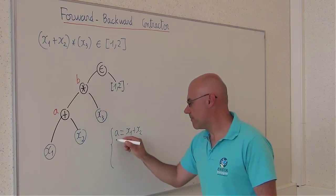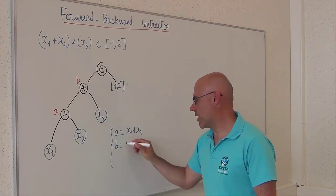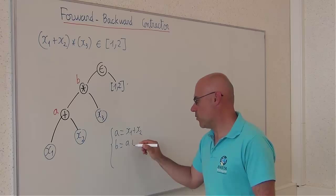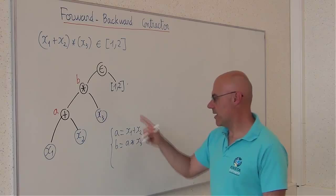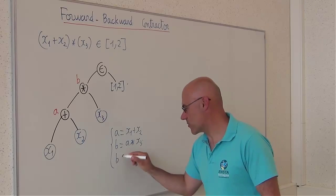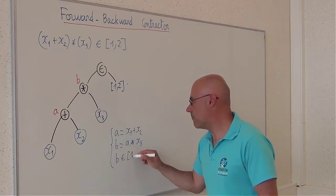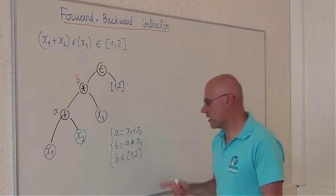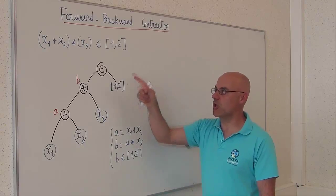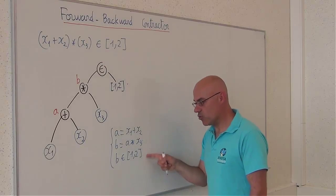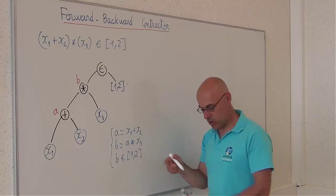b is equal to a multiplied by x3, and the last constraint, b belongs to [1,2]. This is the decomposition of this constraint into primitive equations or constraints.